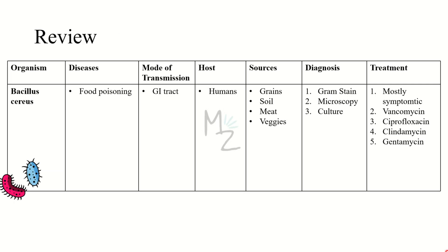To summarize: the organism is Bacillus cereus, responsible for food poisoning (fried rice syndrome) and other diseases like endophthalmitis and gastroenteritis. Its portal of entry is the GI tract. Humans are the host; major sources are grains like rice, as well as soil, meat, and vegetables. Diagnosis is based on gram staining, microscopy, and culture. Mostly symptomatic treatment is given, but vancomycin, ciprofloxacin, clindamycin, and gentamicin can also be used.